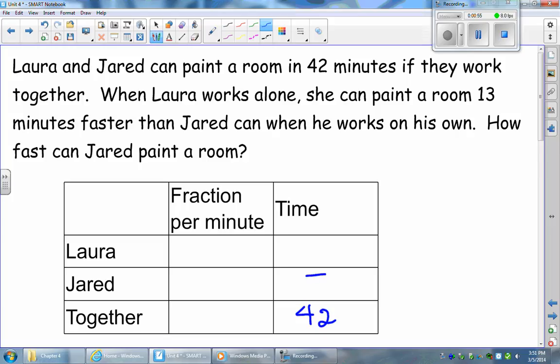So if we give Jared variable j for his time, then we could say that Laura does it in j minus 13 minutes, because she's 13 minutes faster, so that's 13 less minutes than it would take for Jared to do the work.